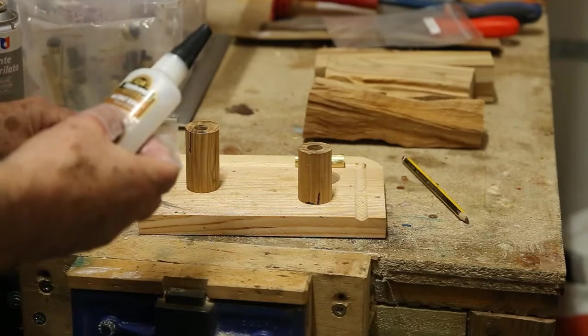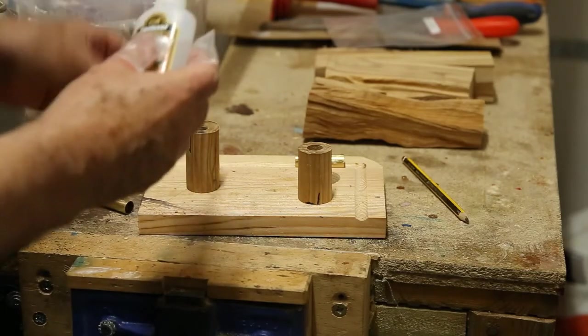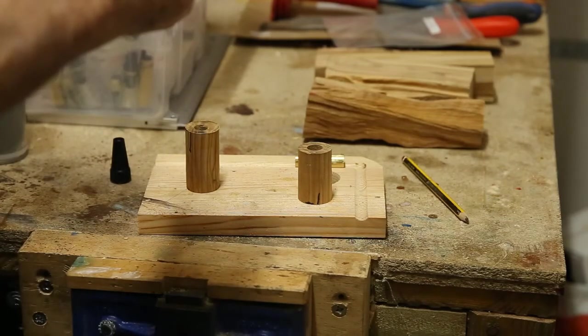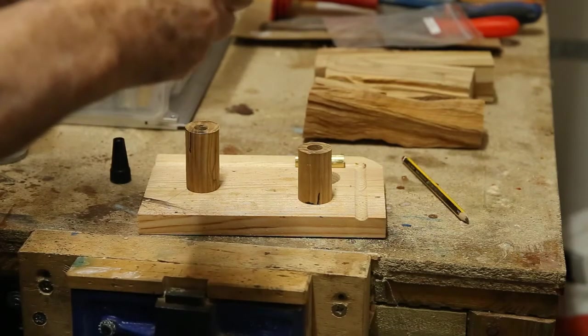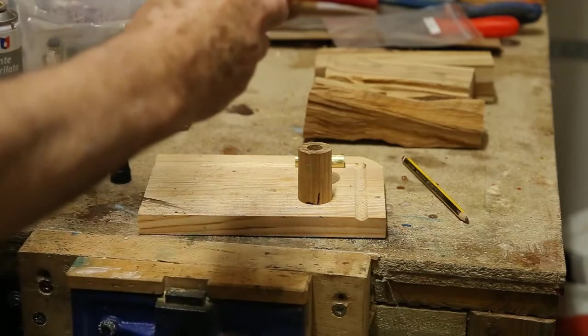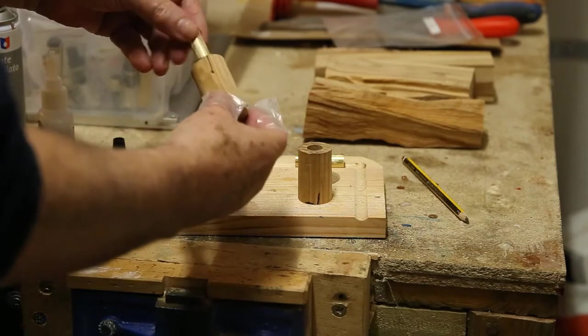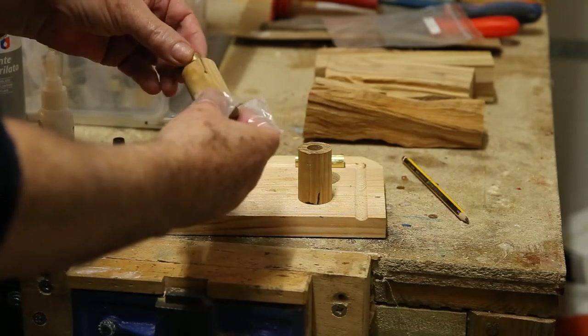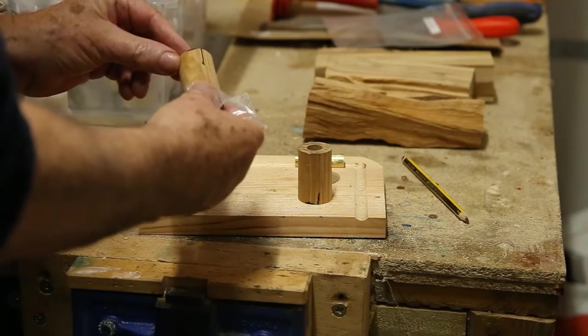So, first of all, take some super glue, put an amount on the brass tube. By the way, this is thick super glue, it's different from the thin super glue that you get. And then you put it into the blank, twisting as you go until it gets well covered and stuck.